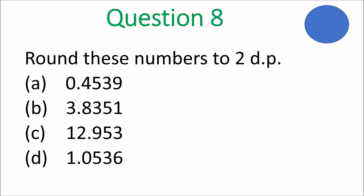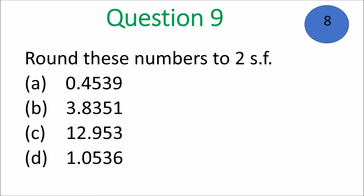And question 8: Round these numbers to two decimal places. Look at the digit — two numbers after the point is two decimal places. Underline the digit you need to look at to see if you need to change it or not, then look at the number at the back. Question 9: Round these numbers to two significant figures. Remember, 0 at the front is not significant; 0 in the middle is. Underline the digit that you would have to look at to see if you need to change it or not, for two significant figures.